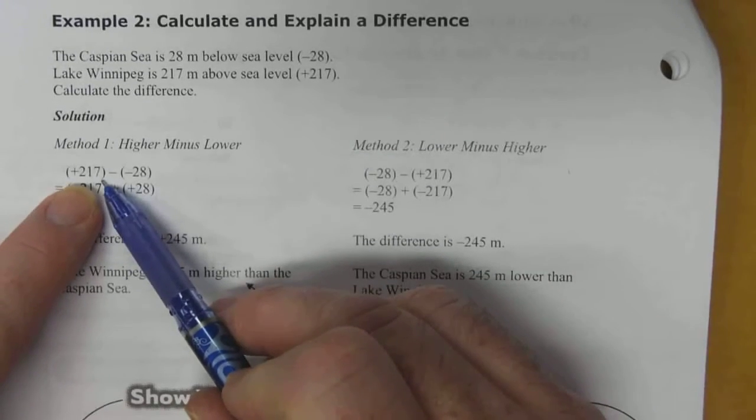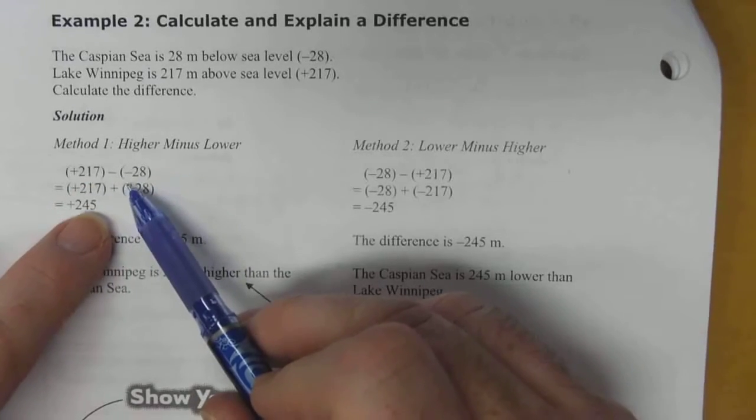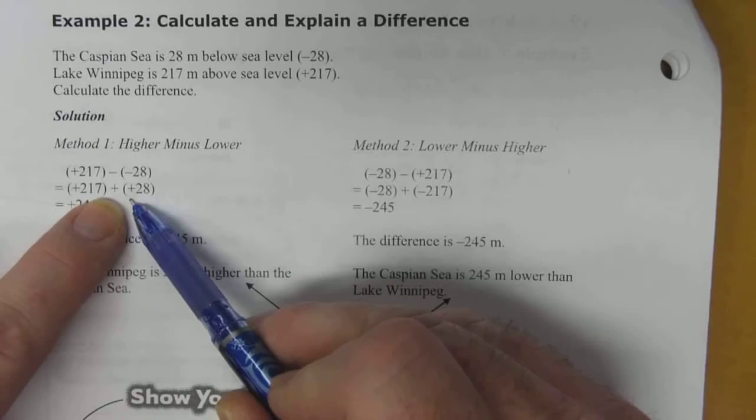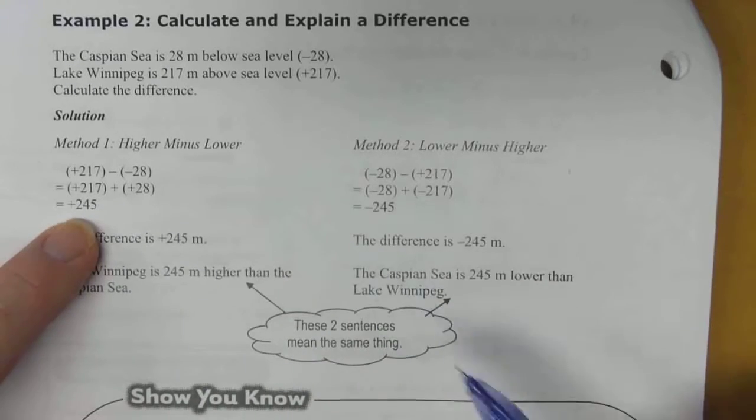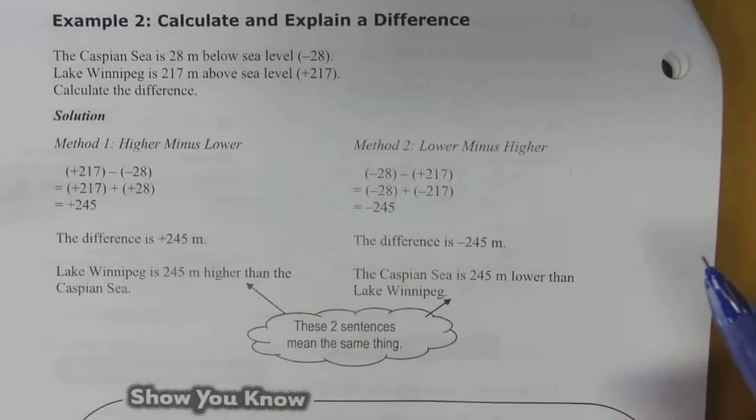So positive 217 subtracting a negative 28. Well, we can add the opposite. So 217 plus, and instead of a negative, this becomes positive as well. So 217 plus 28, difference is 245. So the difference between the two numbers is 245 meters.